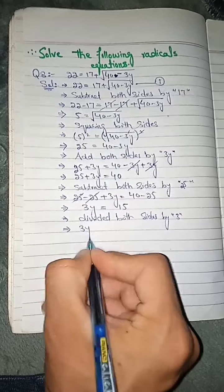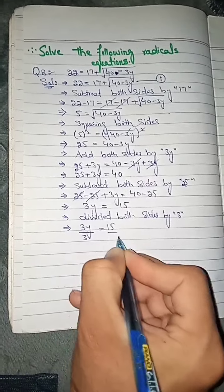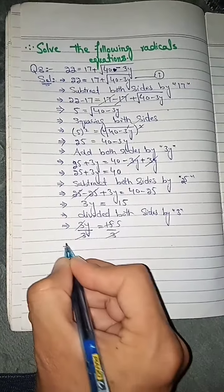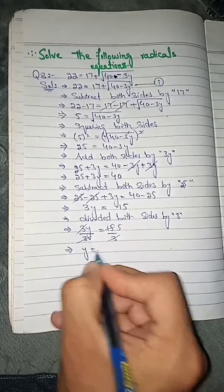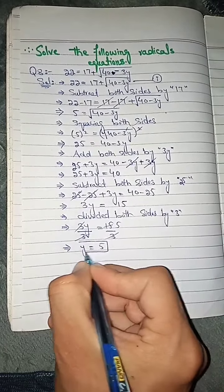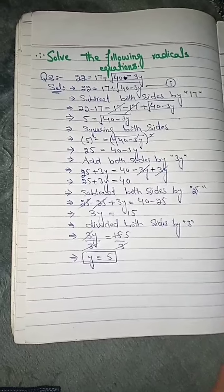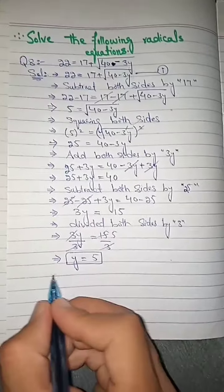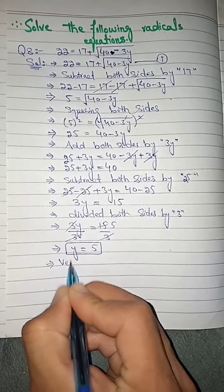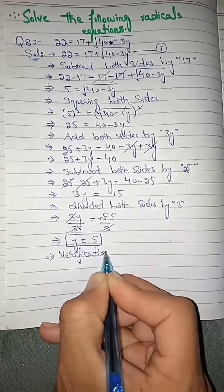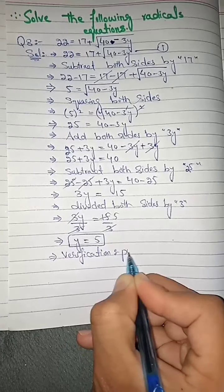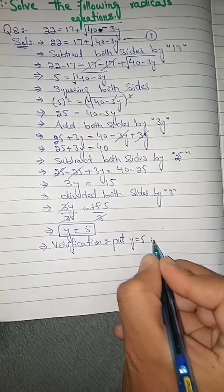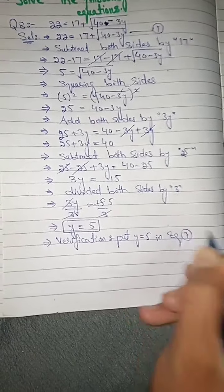Adding 3 and simplifying: 3y equals 15, so y equals 5. Now let's do the verification — substituting y equals 5 back into the original equation to check the left side equals the right side.